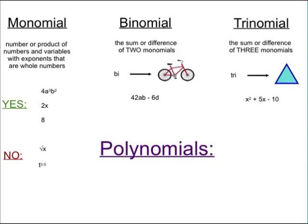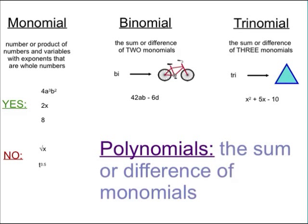Now all of monomials, binomials, and trinomials - they're all polynomials. Polynomial is the sum or difference of any number of monomials. So you could have a million monomials, add them all together, and that's a polynomial. A monomial is a polynomial, a binomial is a polynomial, and a trinomial is a polynomial.